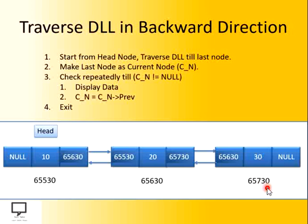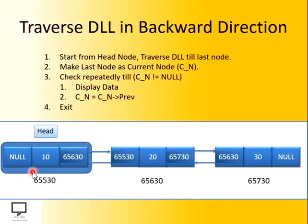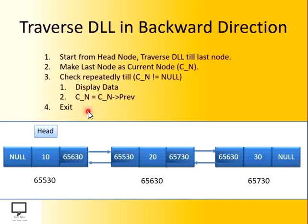Let's consider that we have executed step one and we are at the end of the list — this is my current node. Then the same thing we follow: we check repeatedly whether my current node is not equal to null, display the data, and move in the previous direction. Now I am at this position — I display the information part and again move in the previous direction. Now I am at the head, I display whatever data is there, and move to the previous node. The previous node is null because this is the end of the list in the backward direction. So we exit from the function, and in this way we have done the traversal of the doubly linked list in backward direction.